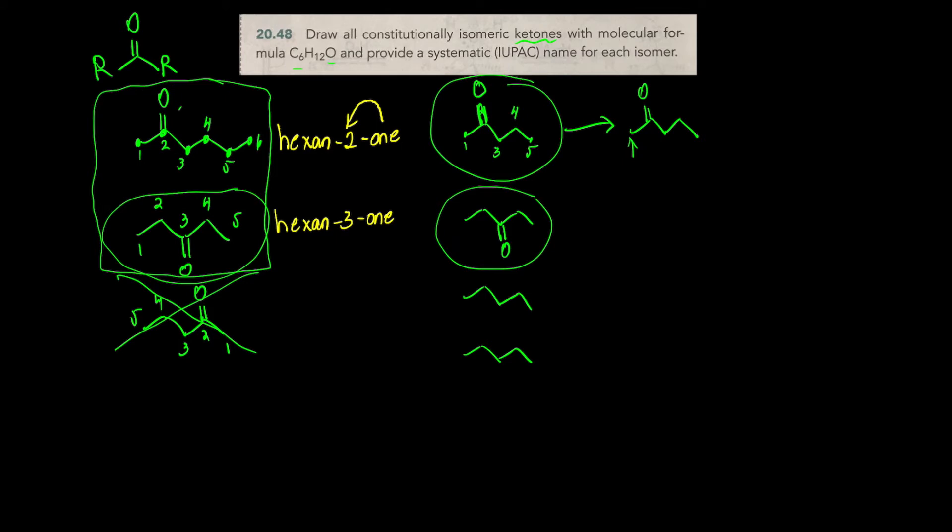So now from here, we want to add the additional sixth carbon in the form of a methyl group. The methyl group can't be added here, because that would make, you know, hexan-3-one. It could be added here, or here. It cannot be added here, because that would make the original molecule that I have on the top left of this slide. So we have two possibilities. We could add it here, or we could add it here.